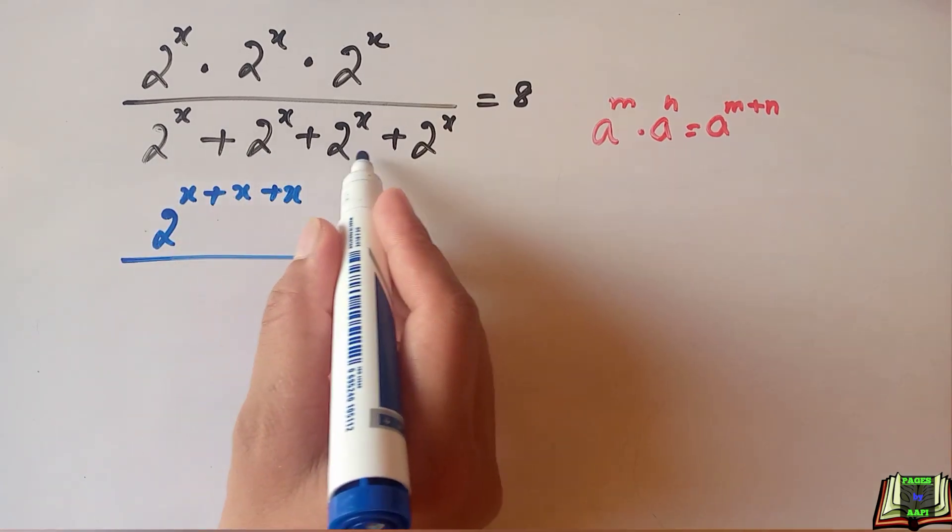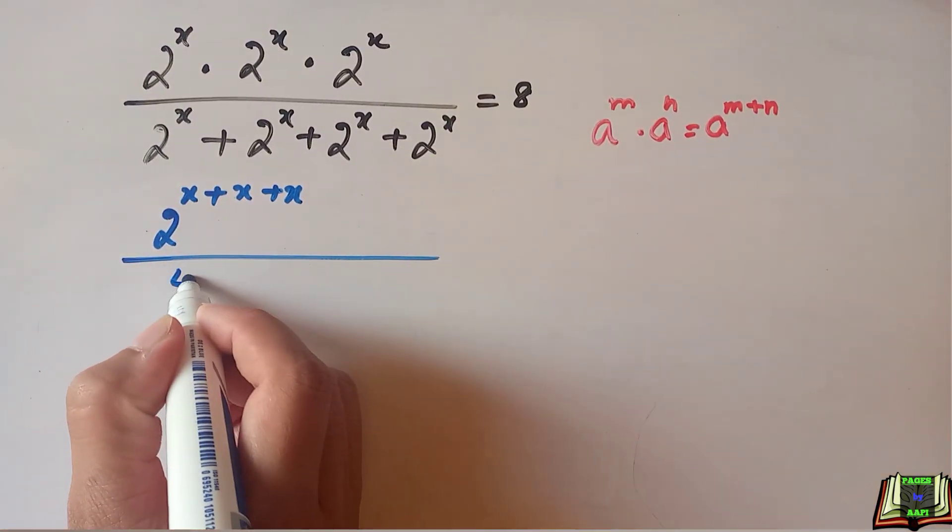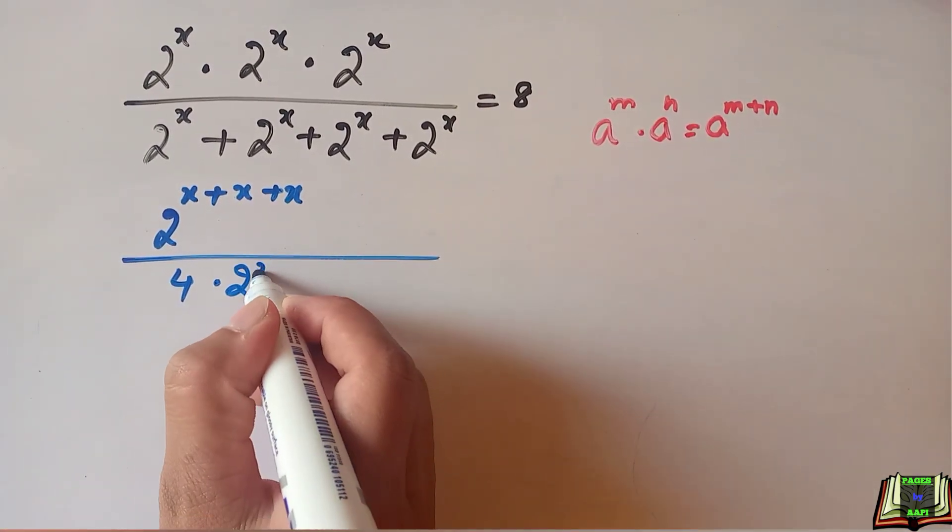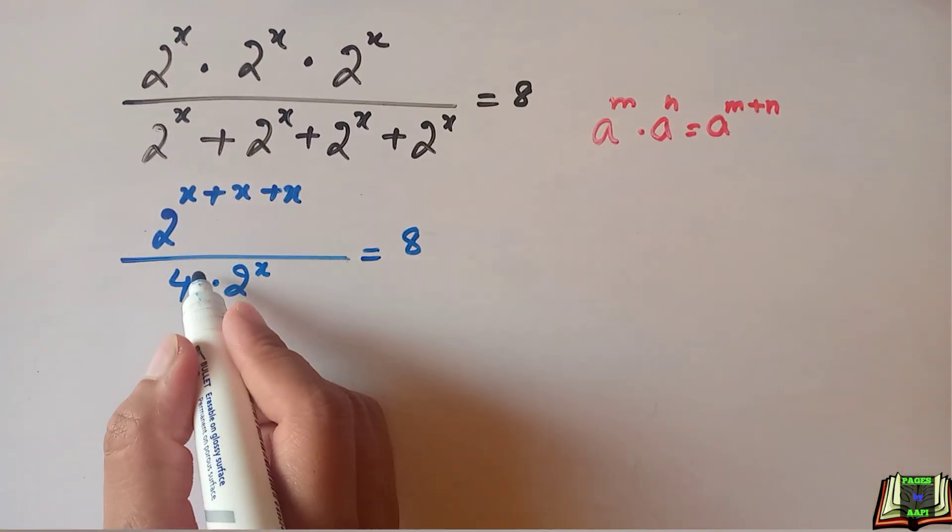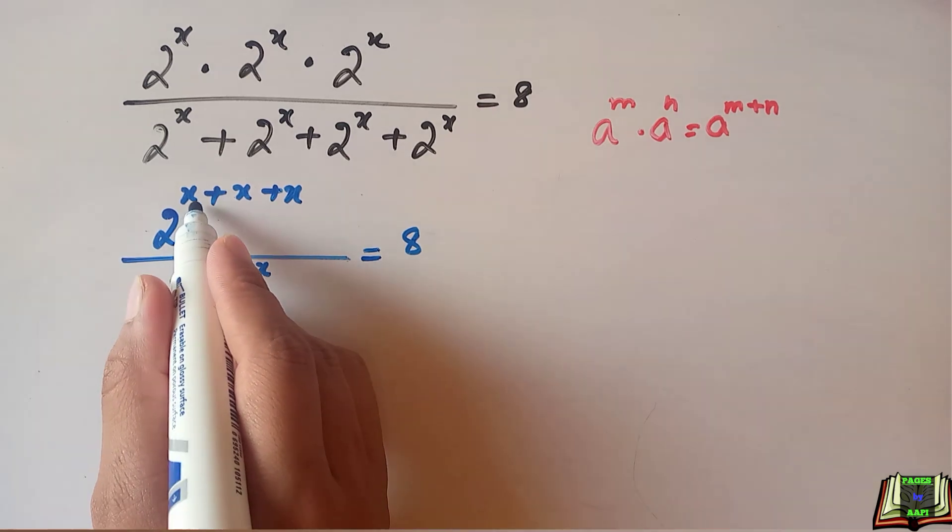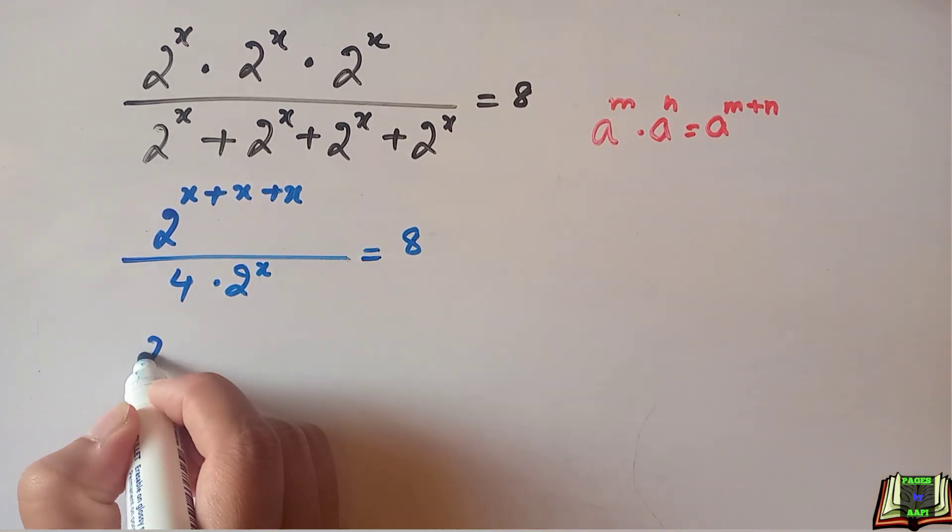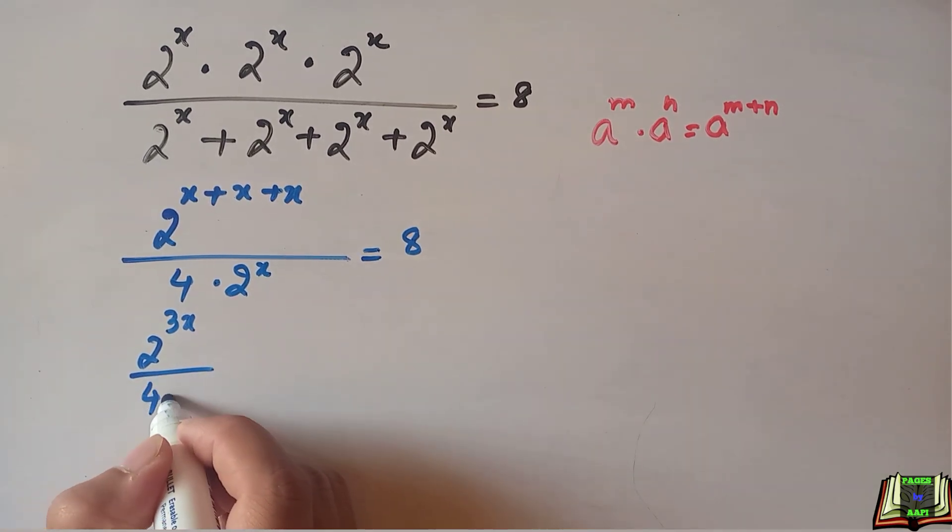1, 2, 3, 4: 4 times 2 to the power x is equal to 8. We can add the powers like 1, 2, and 3x: 2 to the power 3x divided by 4 times 2 to the power x is equal to 8.